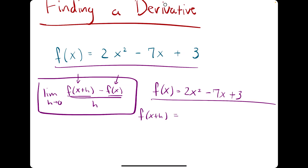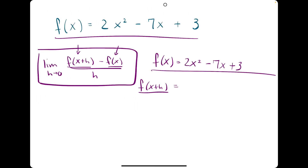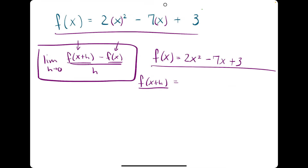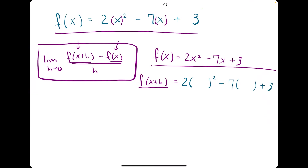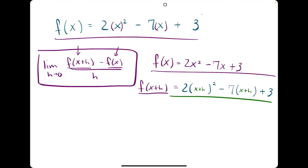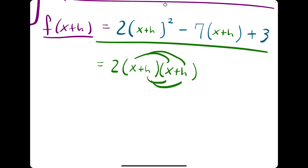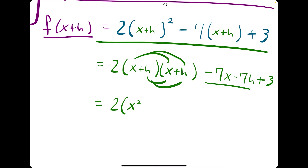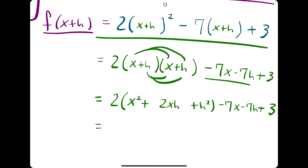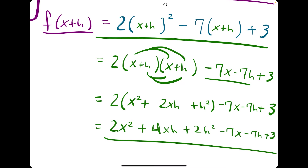Finding f(x+h) is the somewhat trickier part. If we see x plus h in the parentheses, whatever is in the parentheses gets substituted into the function wherever we see x. So we rewrite the function but plug in x plus h everywhere x appears. Then we expand everything. Expanding (x+h) squared — treat it as (x+h)(x+h) and distribute — gives x squared plus 2xh plus h squared. Distributing the minus 7 to (x+h) gives minus 7x minus 7h, plus 3 on the end. So our final f(x+h) is 2x squared plus 4xh plus 2h squared minus 7x minus 7h plus 3.